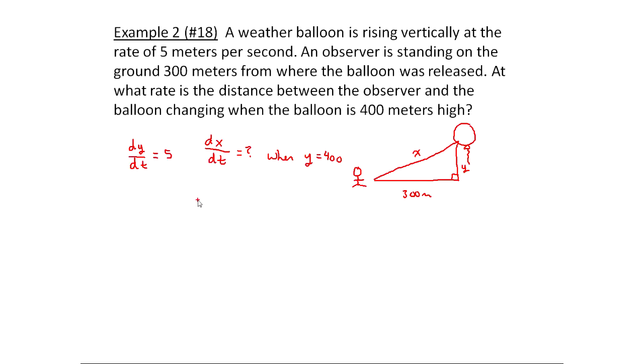We need a relationship between all of these variables. When you have a right triangle like this, the most common relationship is the Pythagorean Theorem. So remember, A² + B² = C². In this case, the legs of my triangle are 300 and Y, so it would be 300² + Y² = X². So it's always the legs, and then they equal the hypotenuse. Everything's with respect to time, so what I'm going to do is take d/dt of both sides. Notice I'm not messing with this because it's a constant, and when I go take the derivative of it, it'll be zero.